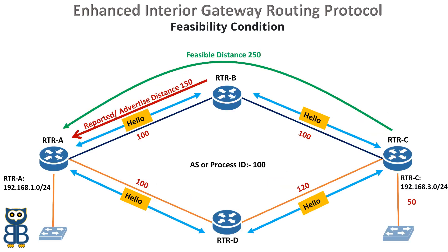Let's see how Router A takes these values. Router B will advertise to Router A its metric towards the destination — basically Router B is telling Router A its metric value is 150 to reach the destination network. From Router A's point of view, this is called the advertised distance or reported distance. Router A has a topology table, and in this topology table it will save this metric. The advertised distance to reach this destination is 250.